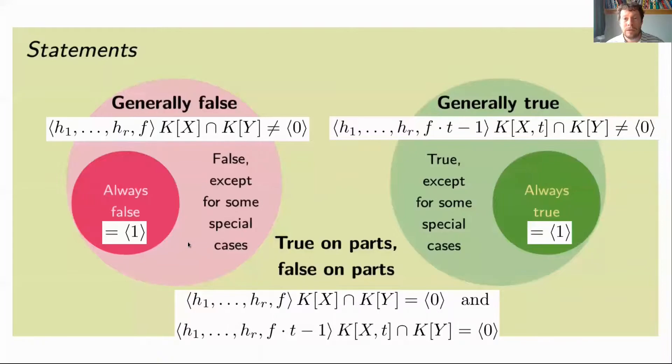A figure can illustrate how these notions are combined: generally true and always true, generally false and always false. In these two cases, the elimination ideal is not equal to zero. In the always case, it equals one, the ideal generated by one.